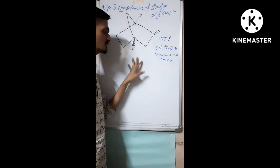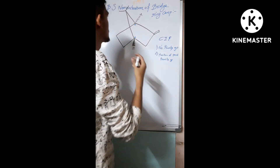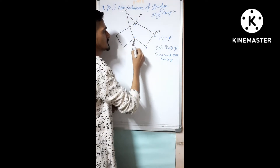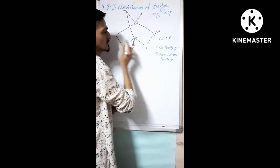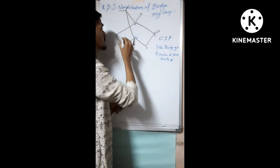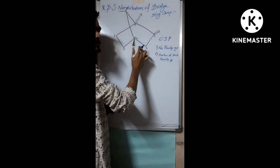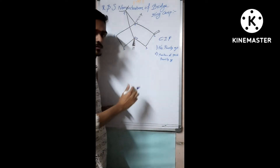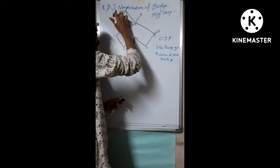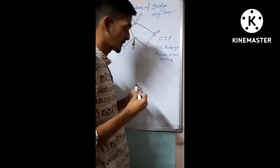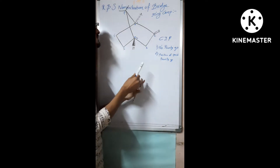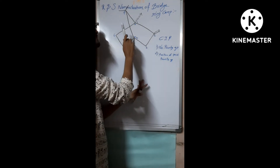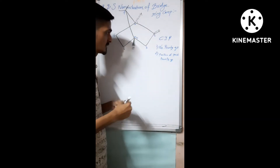Let's number it. Numbering starts from the first carbon, second carbon, third carbon, fourth carbon, fifth carbon, sixth. After numbering the ring, we also have to number the bridge. This carbon is common to the two ring carbons. After numbering, we have a bridging compound having seven carbon atoms — it is bicyclo[2.2.1]heptane.